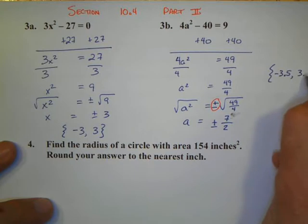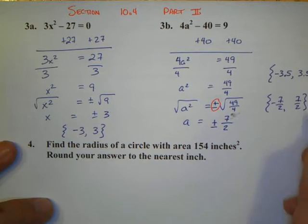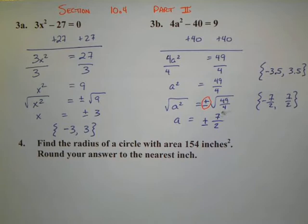Now realize the book might write this as a decimal, possibly as 3.5. So don't be thrown either by writing an answer as negative 7 halves and positive 7 halves or negative 3.5 and positive 3.5.